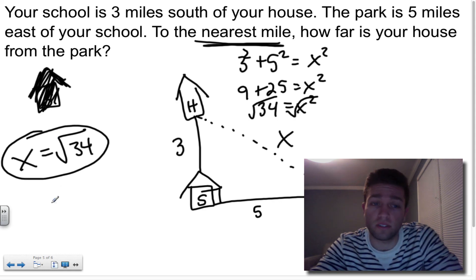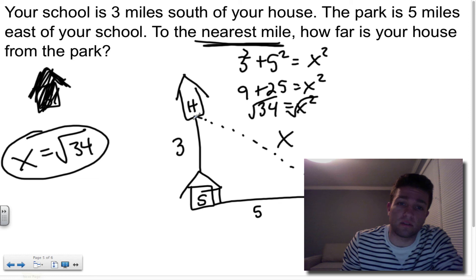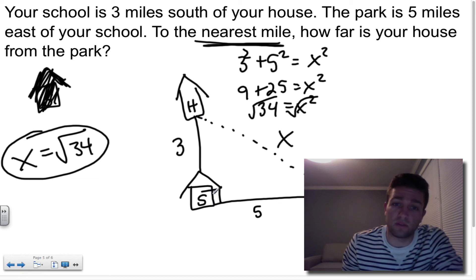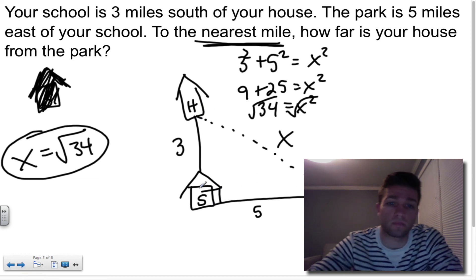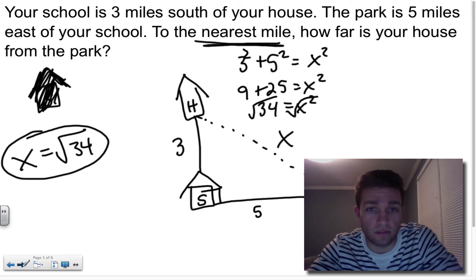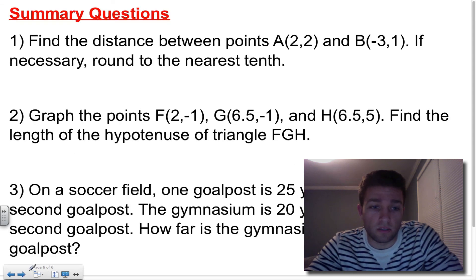Finding the distance between two points. You can find the distance between any two points by using the Pythagorean theorem most of the time because it's going to form a right triangle if you have two other places.